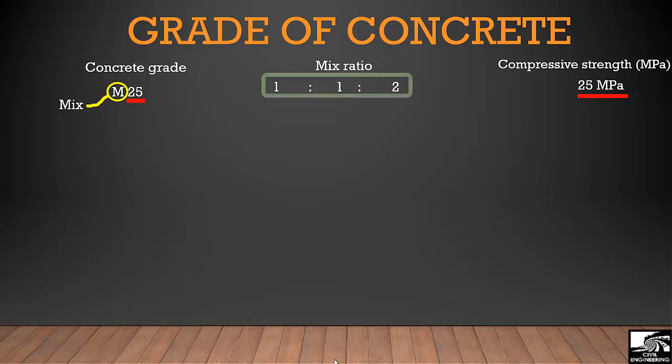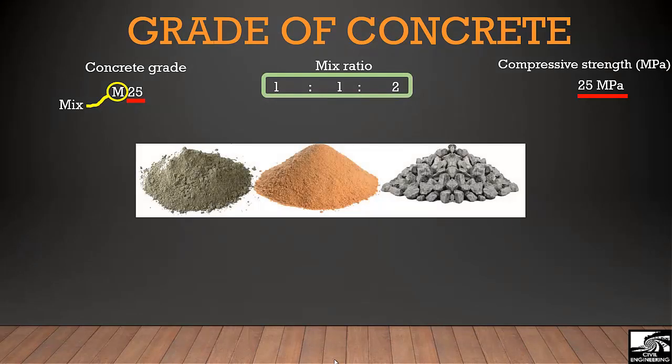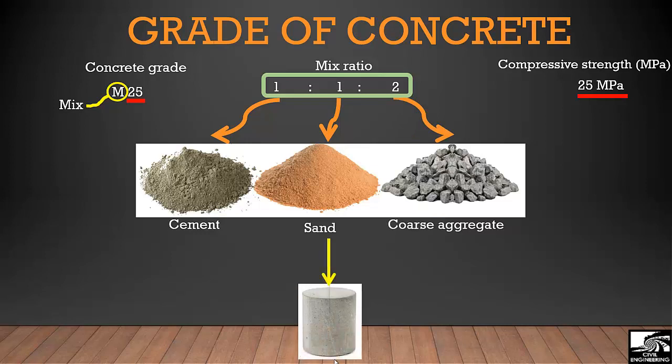Now what this mix ratio shows. It corresponds to three different components of concrete. The first number shows cement, second shows sand, and third shows coarse aggregate. These components combine together to form a solid mass known as concrete.